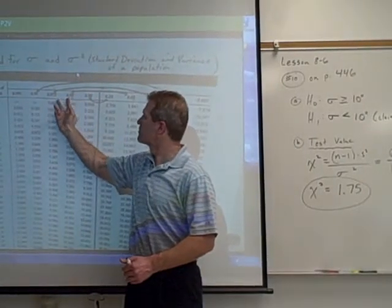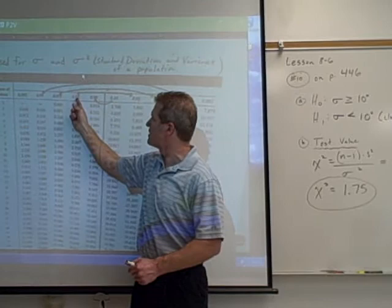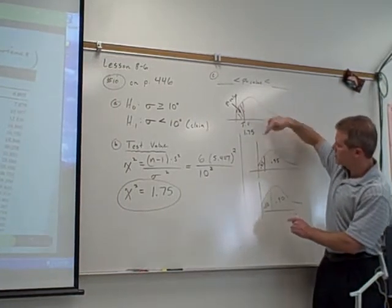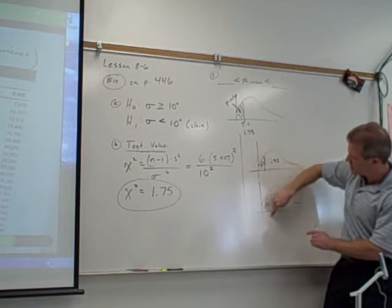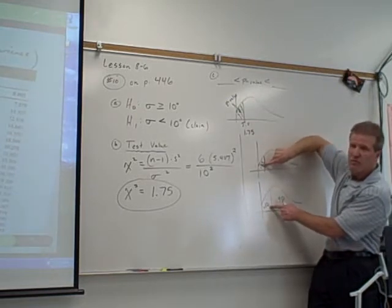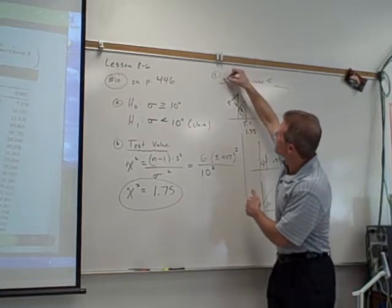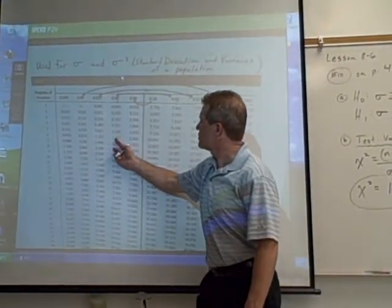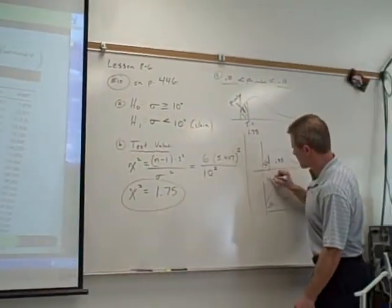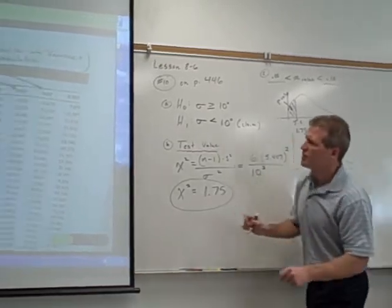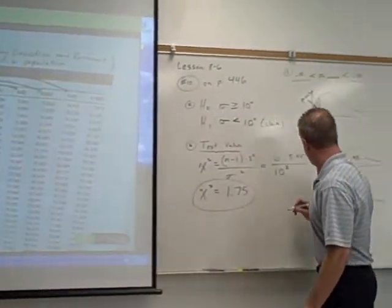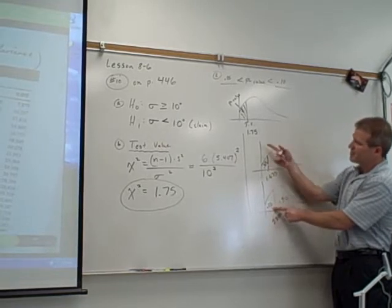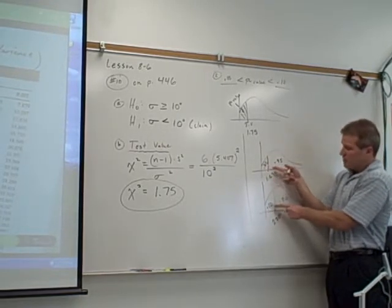So when you're doing a left-tail test, you always have to subtract these from 1. In this case, 1 minus 0.95 is 0.05. 1 minus 0.9 is 0.10. So what I know is that this actual p-value, since this test value is somewhere between this number and this number, I know the p-value is somewhere between 0.05 and 0.10. If our test value would have been 1.635, the p-value would have been 0.05. If the test value would have been 2.204, then my p-value would have been 0.10. But since the test value is actually between these two numbers, my p-value is actually between those two areas.